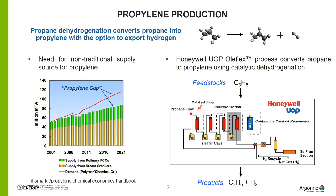But after year 2008, there is a gap between propane demand and propane supply, which means we need new processes for on-purpose propylene production. The red figure shows one of the processes from Honeywell UOP for propane dehydrogenation. Propane gas goes with the catalyst into those four fluidized bed reactors, and then catalysts are separated from the products.